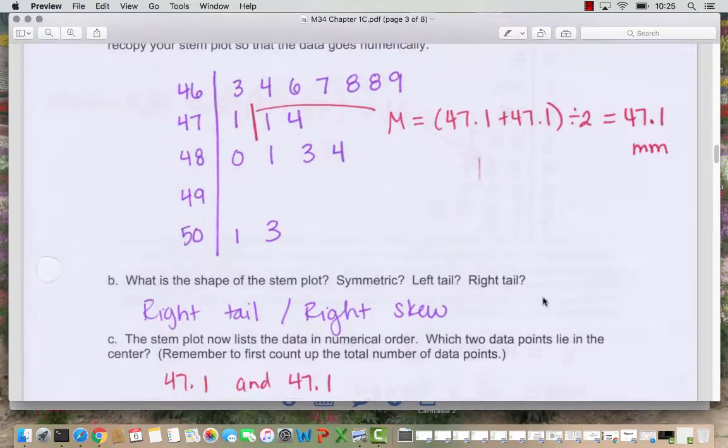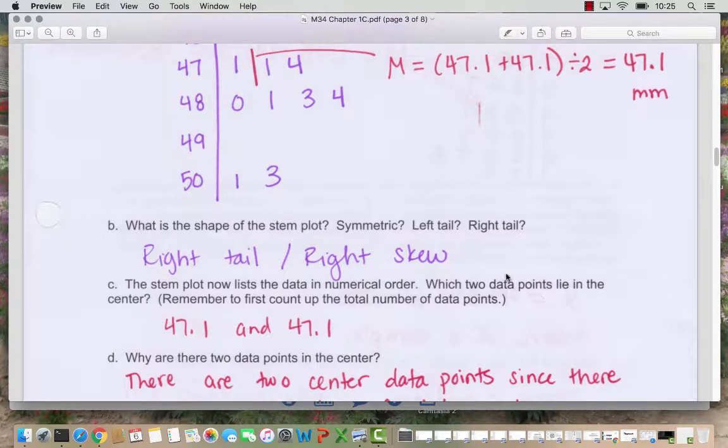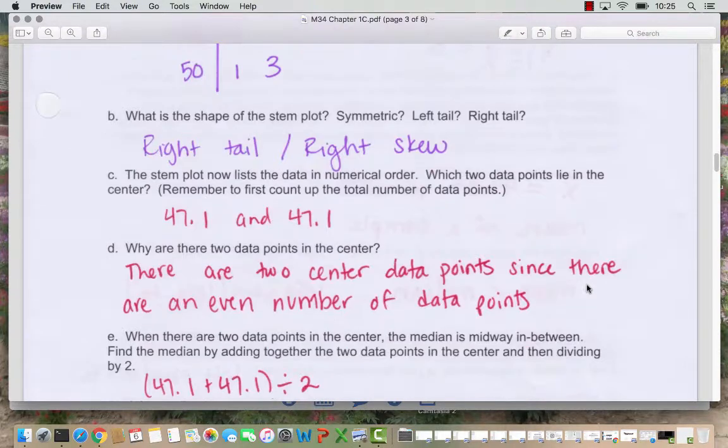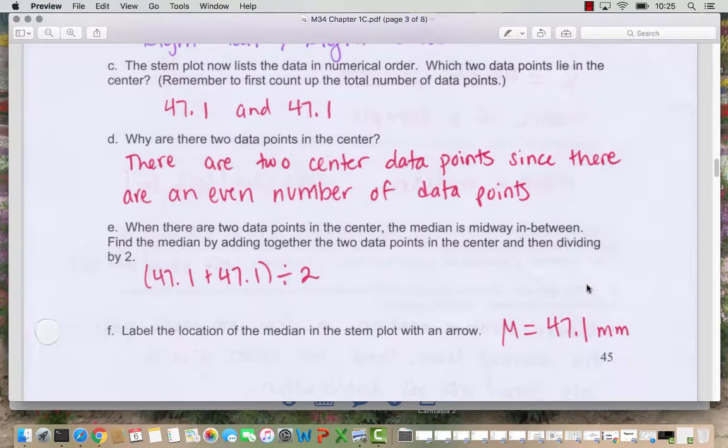See in our hand drawn stem plot we also have that gap. It shows us where there's a break in the data. So we say this is a right tail or a right skew distribution. And then this is how we found the median the 47.1 and 47.1 were averaged. So when there are two center data points we take an average. There's two because we had 16 data points. So anytime you have an even number of data points you're going to have two center values to average. And so we get our median is 47.1 millimeters.